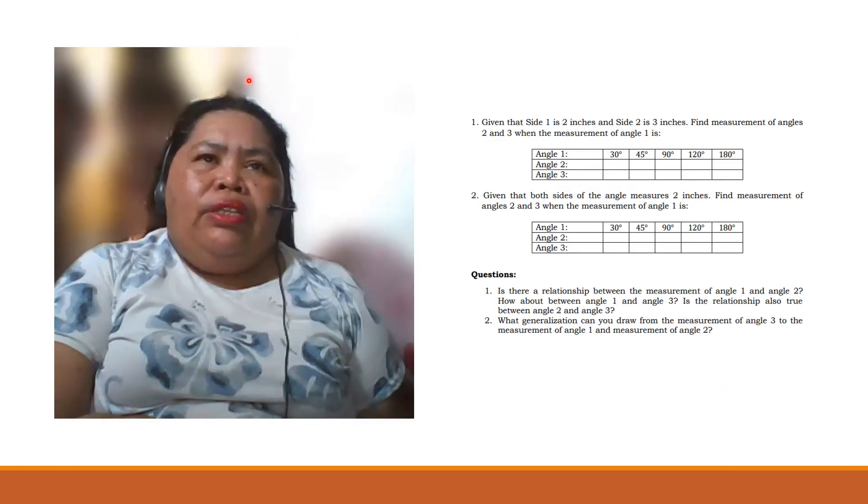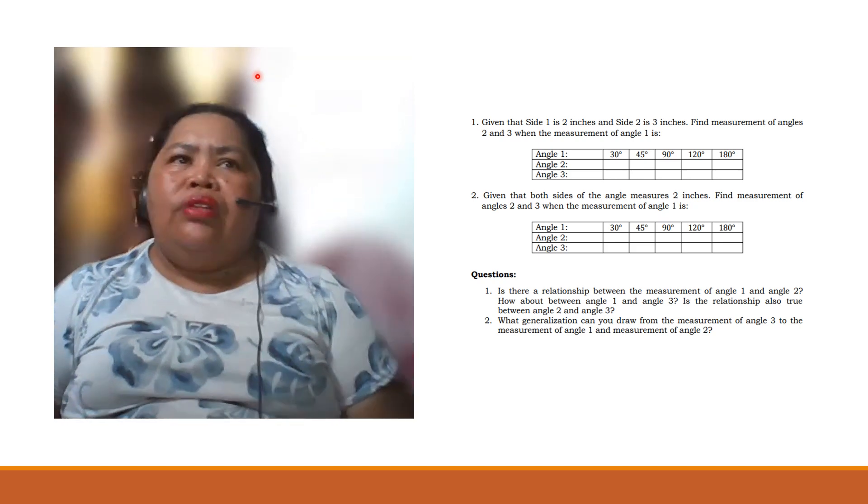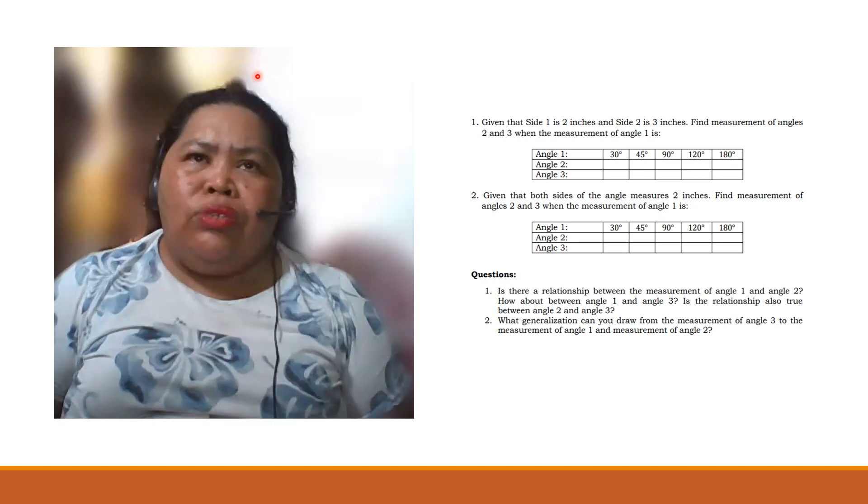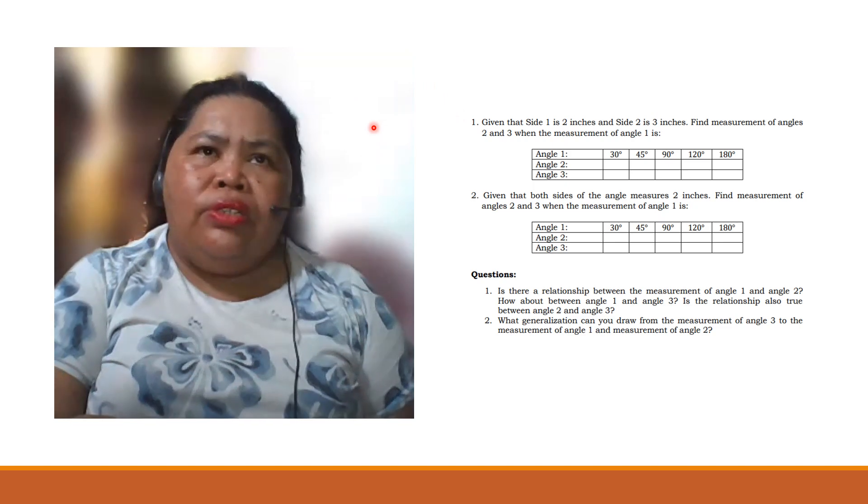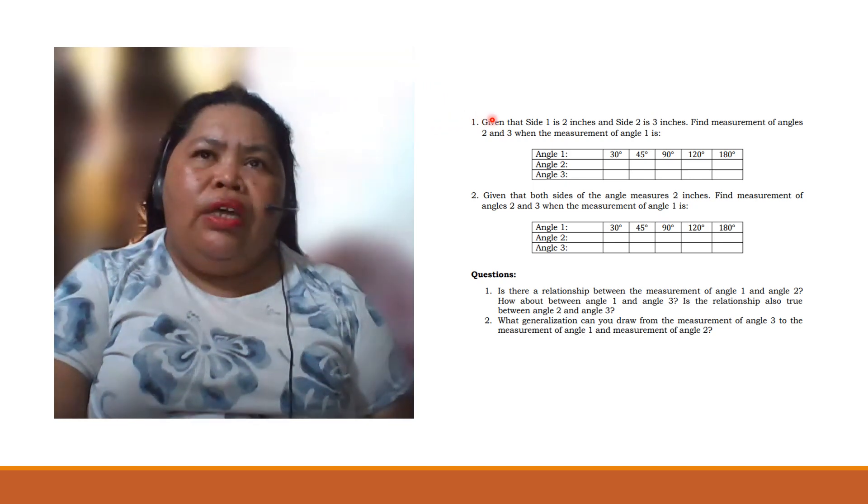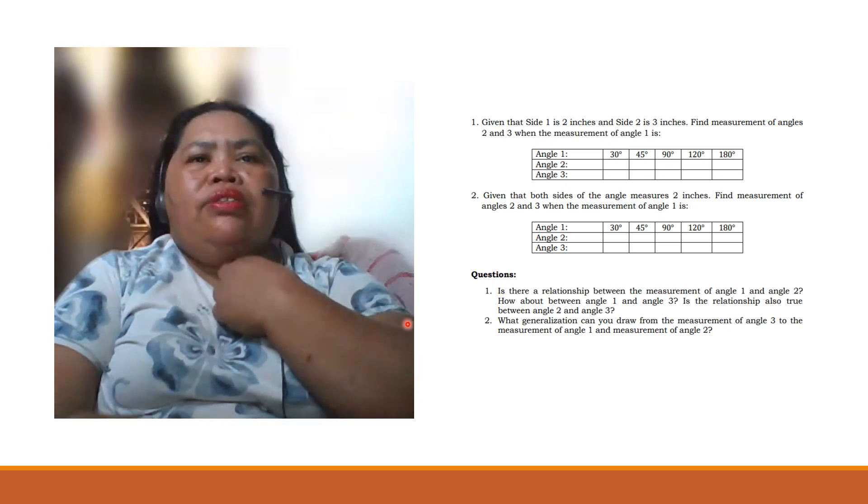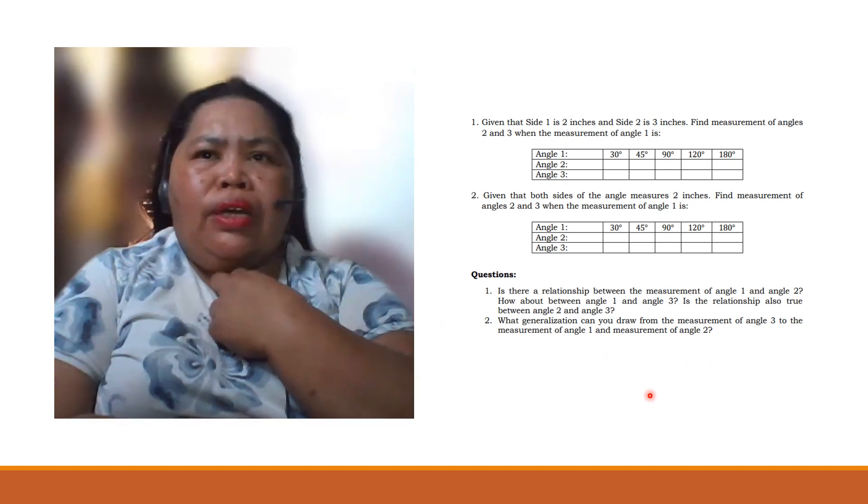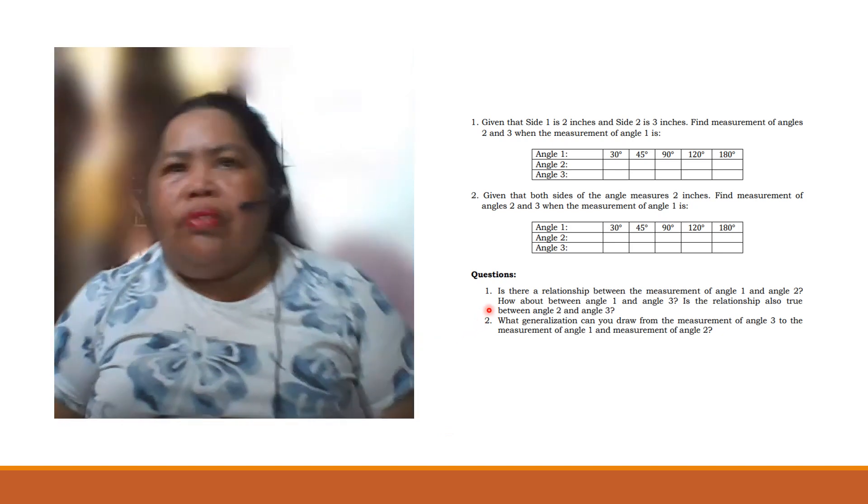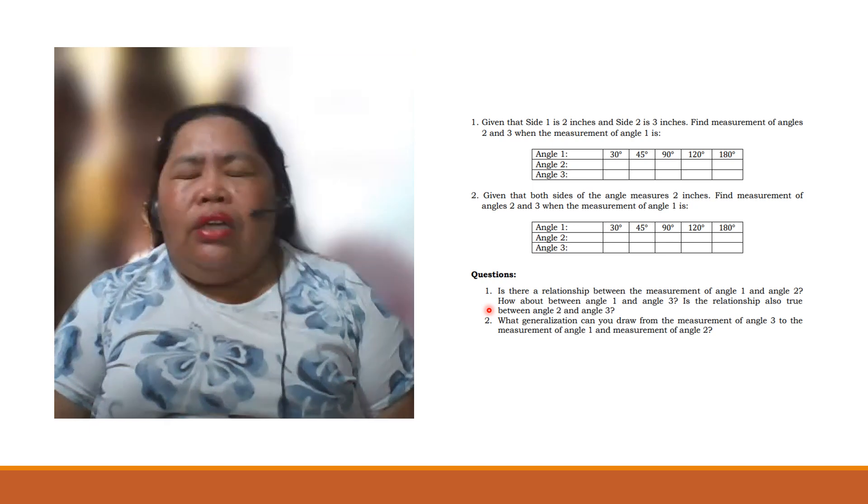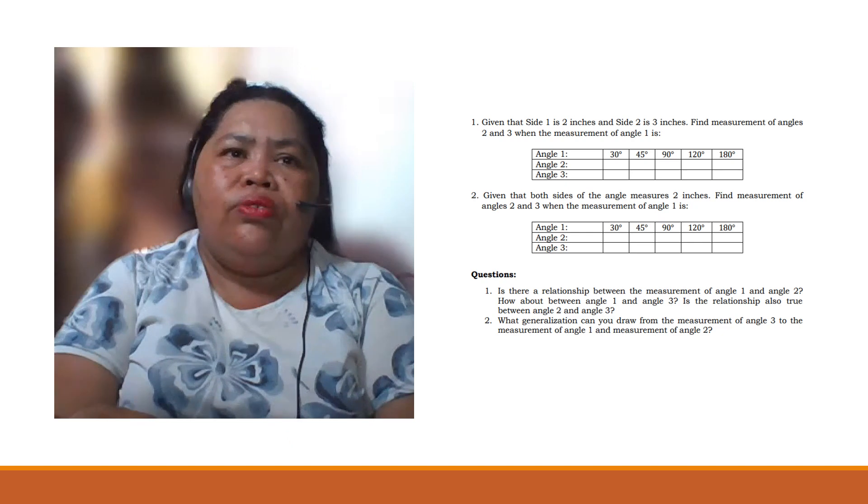Then, given that side 1 is 2 inches and side 2 is 3 inches, find the measurement of angles 2 and 3 when the measurement of angle 1 is, for example, angle 1 is 30, 45, 90, 120. So you are going to supply here. Now, is there a relationship between the measurement of angle 1 and angle 2? How about? So we're doing this. We will have it one by one. And I'm going to illustrate it to you physically.